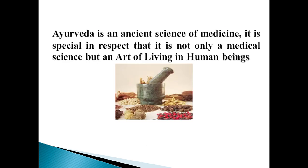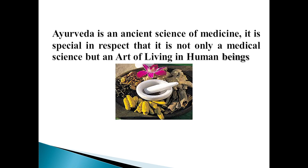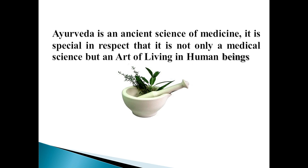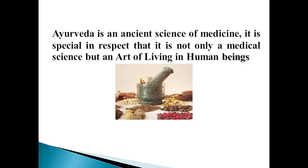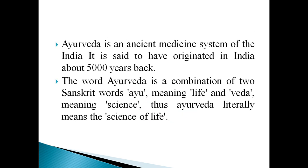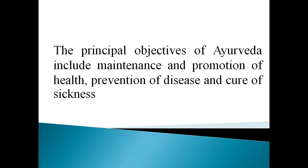Before that, let us study about Ayurveda a little bit. Ayurveda is an ancient science of medicine. It is special in that it is not only a medical science but an art of living. Ayurveda is an ancient medicine system of India, said to have originated about 5000 years back. The word Ayurveda is a combination of two Sanskrit words: Ayu meaning life and Veda meaning science, so Ayurveda literally means the science of life. The principle objectives of Ayurveda include maintenance and promotion of health, prevention of disease, and cure of sickness.